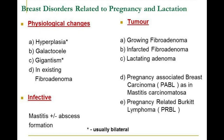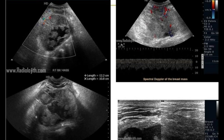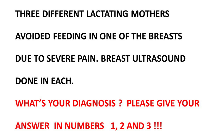Common breast disorders related to pregnancy and lactation are separated into three different categories. Fibroadenoma is the most common, with physiological and pathological changes. In the tumor type, lactating adenoma and pregnancy-related Burkitt lymphoma may appear heterogeneous with no calcification or cystic component in general. Fibroadenoma in pregnancy and lactation can enlarge or show cystic degeneration, which is painless or has mild pain with changes in volume.